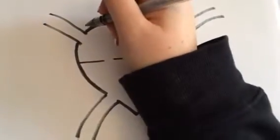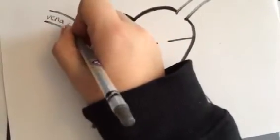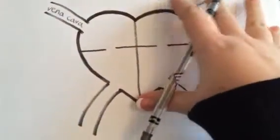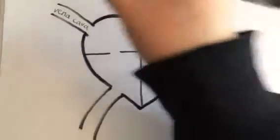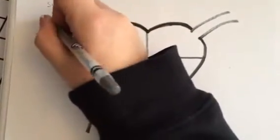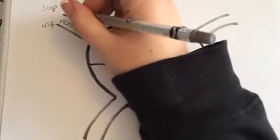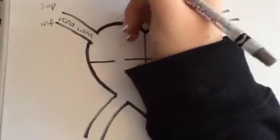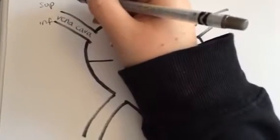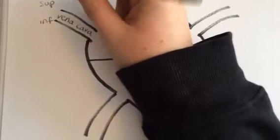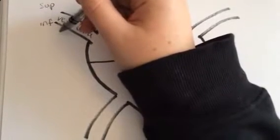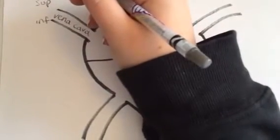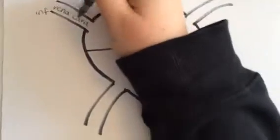Starting from the body going to the heart is the vena cava. There is a superior and an inferior vena cava. The superior vena cava brings blood from the upper portion of your body — your upper extremities and arms. The inferior vena cava brings blood from the lower portions of your body, such as your trunk and legs.